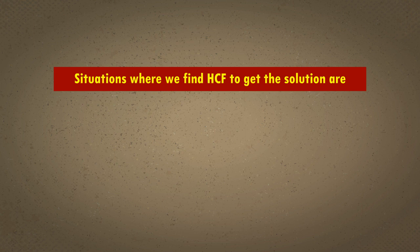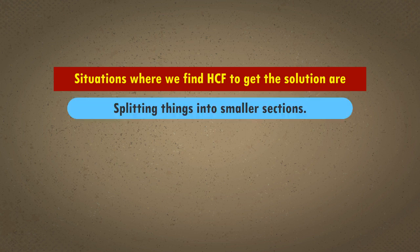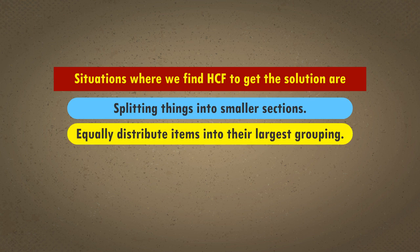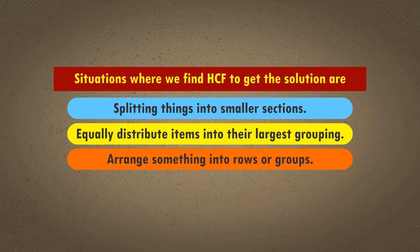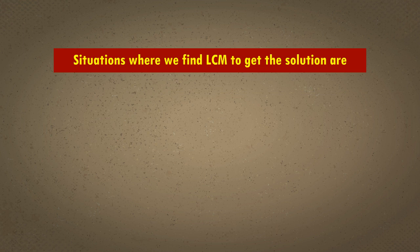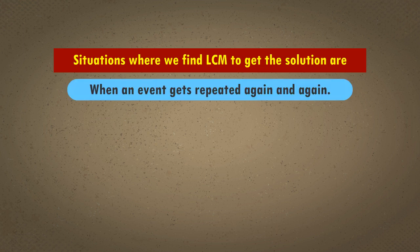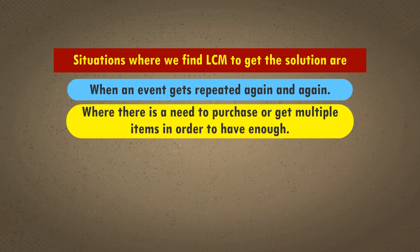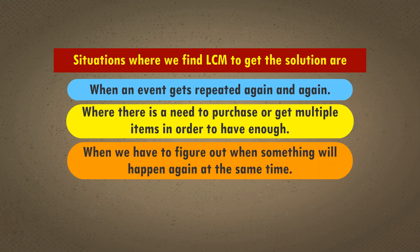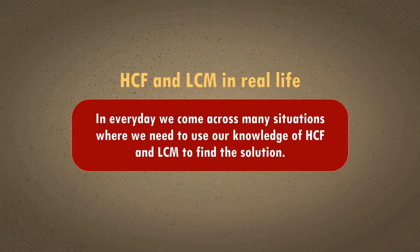Situations where we find HCF: 1) Splitting things into smaller sections, 2) Equally distributing items into their largest grouping, 3) Arranging something in rows or groups. Situations where we find LCM: 1) When an event gets repeated again and again, 2) Where there is a need to purchase or get multiple items in order to have enough, 3) When we have to figure out when something will happen again at the same time. In everyday life, we come across many situations where we need HCF and LCM. Let us see some real-life situations.